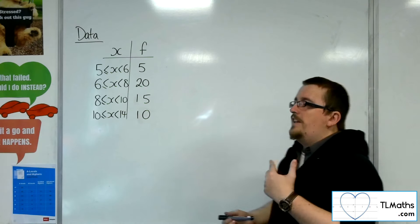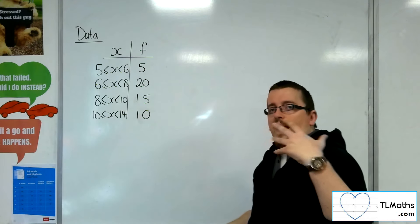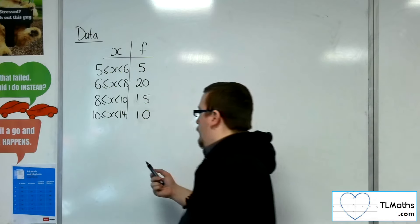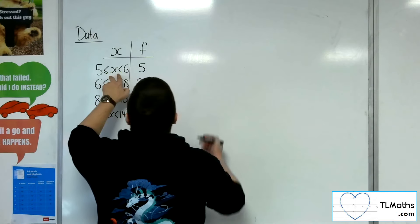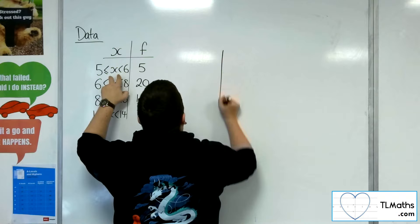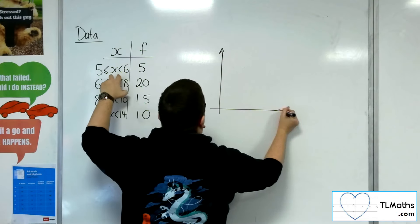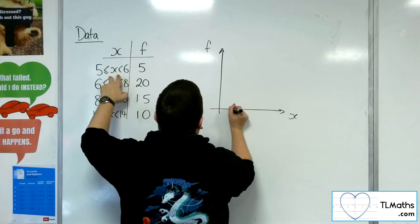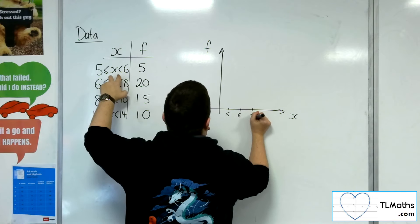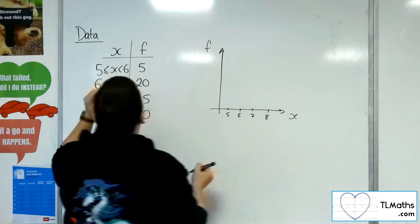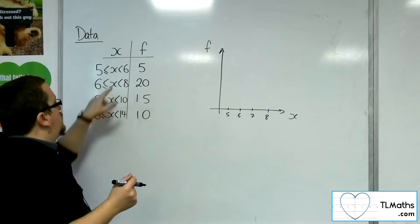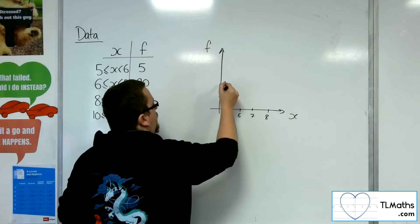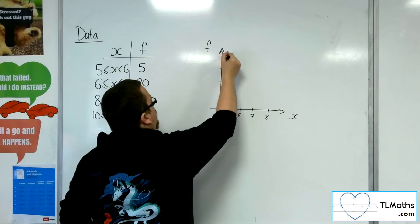So what you need to be clear on is how we actually draw one of these graphs. If I was to draw, for example, if I just went straight in and thought, right, well, I'm going to plot frequency against the x values. And let's say I'm going from 5, 6, 7, 8, just to look at the first 2 here. Here's 5, 10, 15, 20.